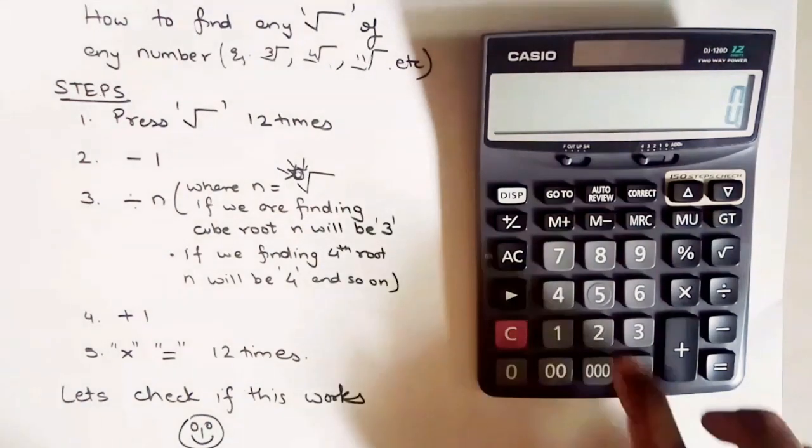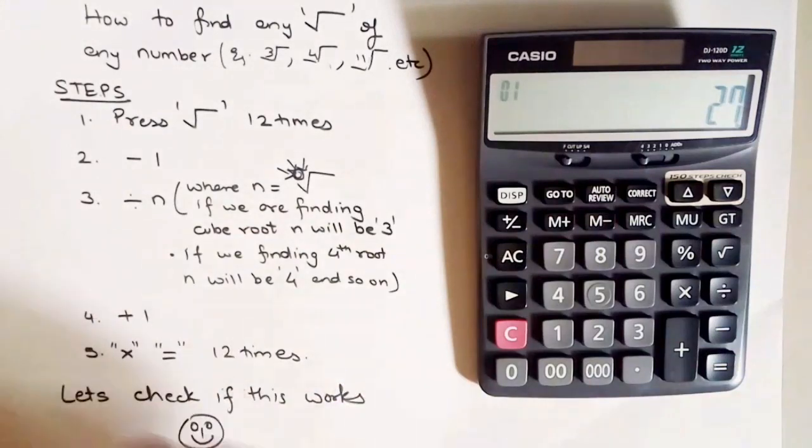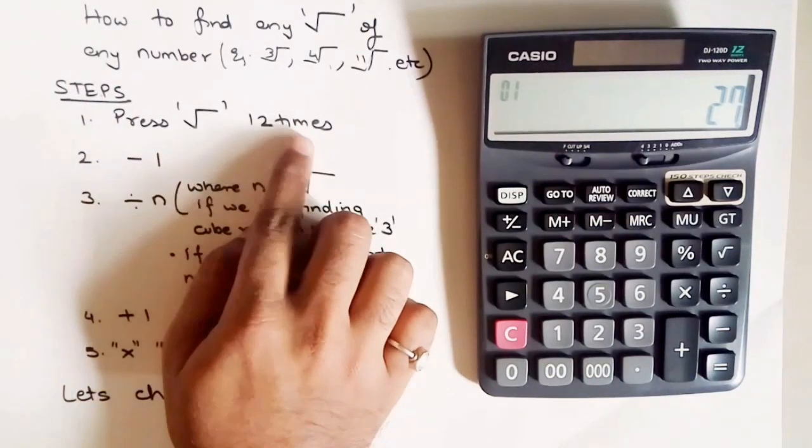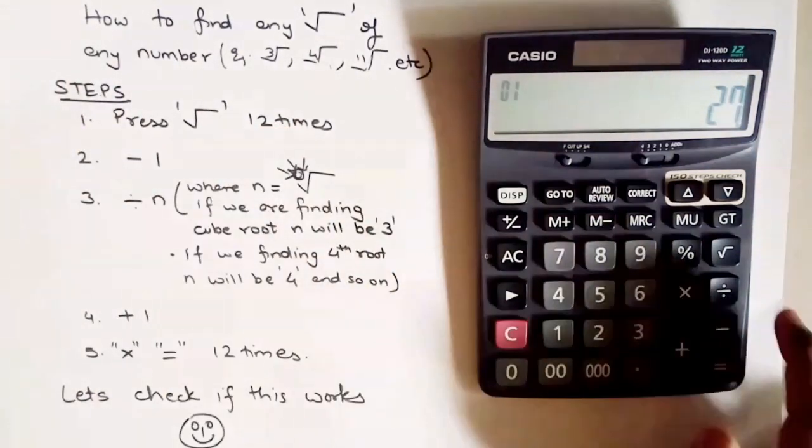Let's take an example. Let's calculate the cube root of 27, so how do you do it? First step, press square root 12 times, so let's count.